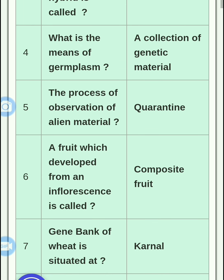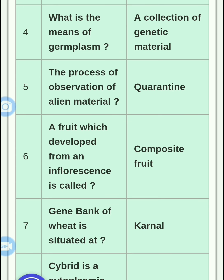The process of inspection of plant material being transferred from outside states — to prevent the entry of insect pests or weeds — is called quarantine. Next question: a fruit which develops from an inflorescence is called a composite fruit. If there is fruit development from an inflorescence, we call it a composite fruit.